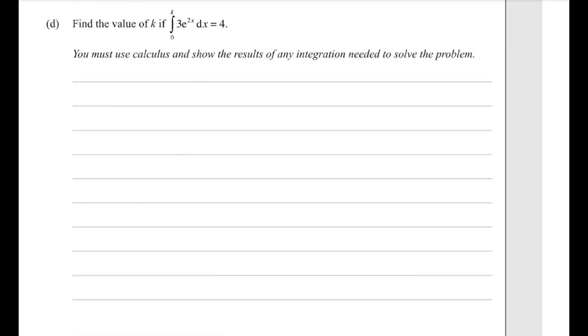Next we have a fairly straightforward one to work out the value of k, so if we integrate 3e to the 2x we get e to the 2x, and then times it by 3 over 2, we need to divide through by the 2 that's in the power. Now if we do that between 0 and k, we will get an answer of 4.